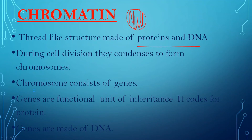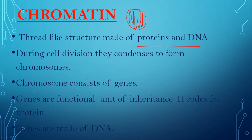During cell division, chromatin condenses to form chromosomes. We know our cells have 46 chromosomes. These chromosomes are only visible when the cell is about to divide and after division forms two cells. Otherwise, inside the nucleus you will always see this thread-like structure called chromatin.